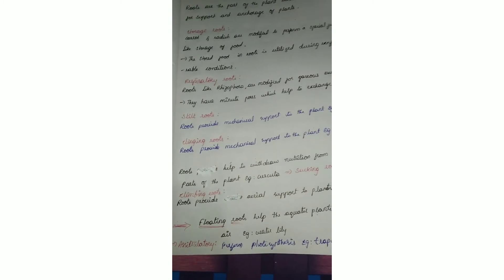Floating roots are useful for floating purpose. The name itself indicates these roots are filled with air for floating. Example is water lily. Assimilatory roots perform photosynthesis. Example is Tinospora. These are the modifications of roots and root systems.